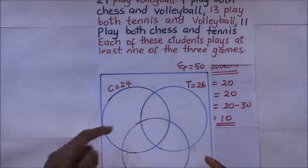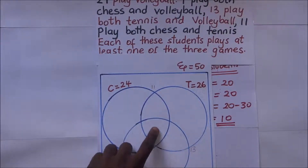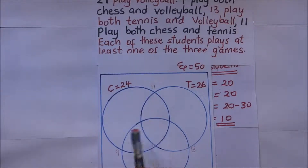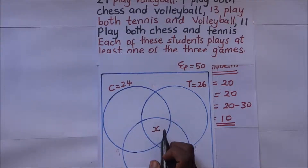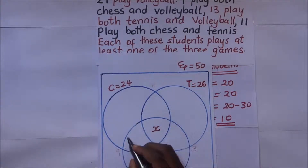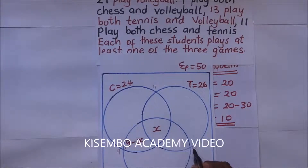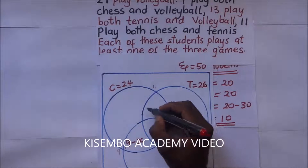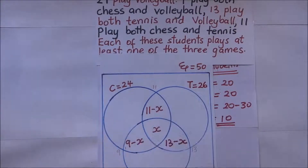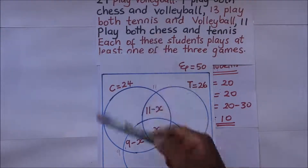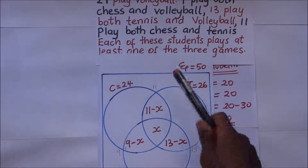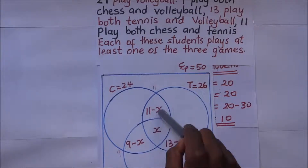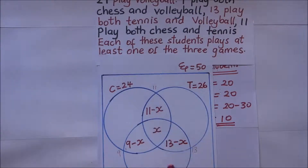There is a certain number of students who play all three games. We don't know how many, so let's call it x. If x students play all three games, then chess-and-volleyball only (excluding tennis) becomes 9 minus x, tennis-and-volleyball only becomes 13 minus x, and chess-and-tennis only becomes 11 minus x. We need to find x to effectively complete the Venn diagram.